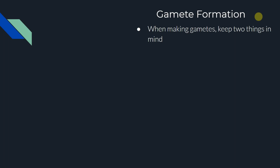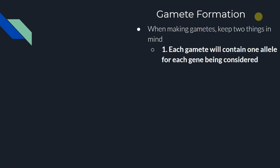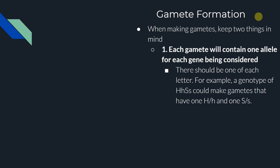When we are making gametes, we want to keep two things in mind. First, each gamete will contain one allele for each gene being considered. Since we're thinking about dihybrid crosses with two genes, there should be one of each letter inside a gamete. For example, with the genotype big H, little h, big S, little s — our gametes must contain one H (either big H or little h) and one S (big S or little s). We'll talk about the different combinations we can make.